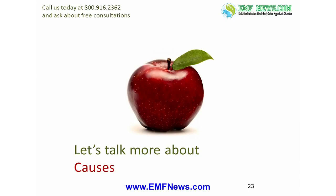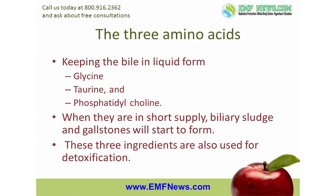The causes of biliary sludge and gallstones are nutritional deficiencies and toxicity. There are three ingredients that the body uses to dissolve biliary sludge and gallstones and to keep the bile in liquid form: the amino acids glycine and taurine, and phosphatidylcholine. As long as these ingredients are available, bile will stay liquid, but the moment they are in short supply, biliary sludge and gallstones will start to form. The problem is that in addition to keeping the bile healthy, these three ingredients are also used for detoxification.